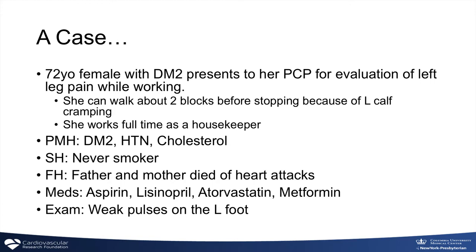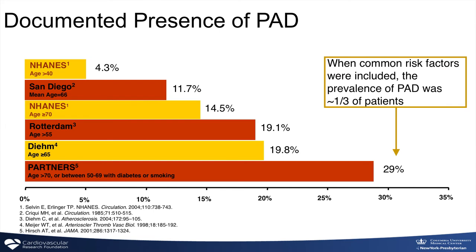Keep this patient in mind as we talk about peripheral arterial disease. PAD is very common, and as patients age and develop risk factors such as diabetes, the incidence increases. Most Medicare-age patients — those age 70, or between 50 and 69 with diabetes or tobacco use history — about a third are going to have PAD. Unfortunately, only half of those patients will have overt symptoms, so this is a silent disease in many patients.